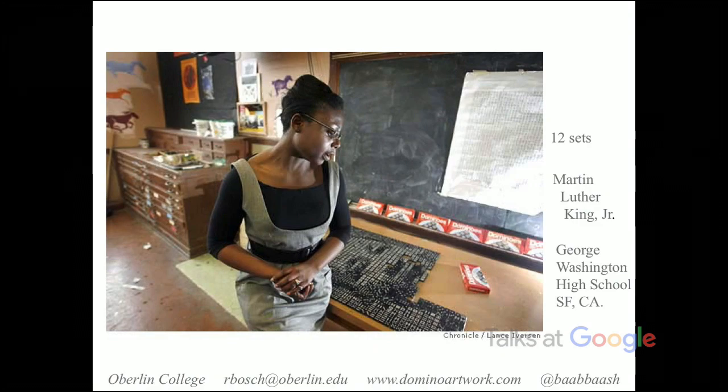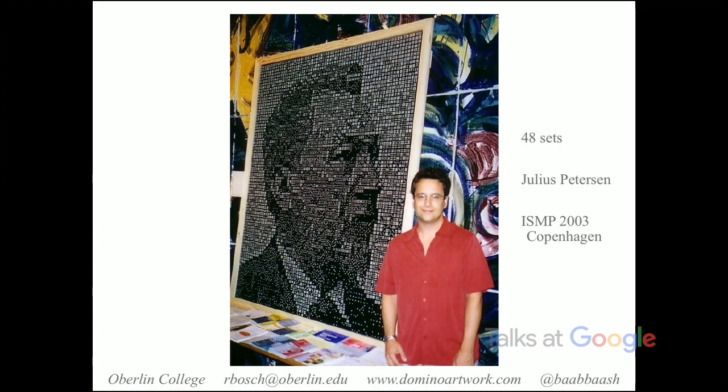This is one I did myself — the largest one I've ever done. It was for the International Symposium of Mathematical Programming in Copenhagen, 2003, and depicts the Danish graph theorist Julius Petersen. If you're a fan of the Petersen graph, this is an image of the man who discovered it. It was a challenge getting to Copenhagen — I did this in 48 small panels, gluing dominoes to linoleum-backed panels with sticky backing. I didn't want to check them, so I brought all 48 panels as carry-on luggage, which was really heavy. I flew from Cleveland to Toronto to Copenhagen, going through security in both the US and Canada.